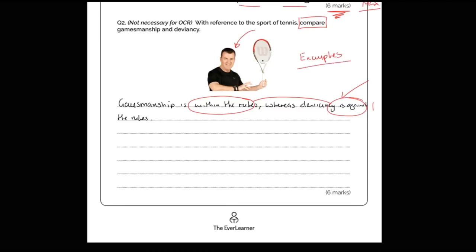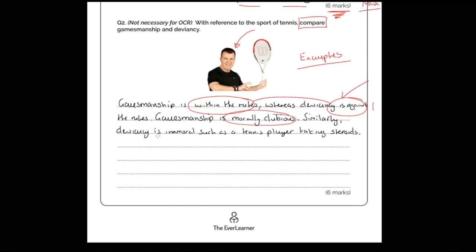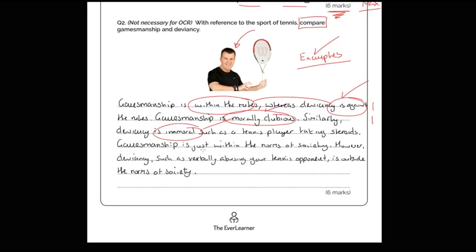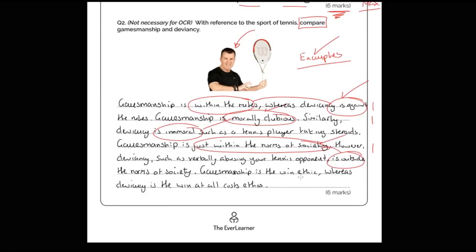Comparisons include both similarities and differences. 'Similarly, deviancy is immoral' - that's a similarity, not the same but similar. 'Gamesmanship is just within the norms of society. However, deviancy, such as verbally abusing your tennis opponent, is outside the norms.' 'Gamesmanship is the win ethic - a professional approach doing what you need to do. Whereas, deviancy is the win-at-all-costs ethic.' 'Gamesmanship leads to assertion and sometimes aggression. However, deviancy leads to violence and drug use.' Even being harsh on myself, I've got potentially more than six points there.